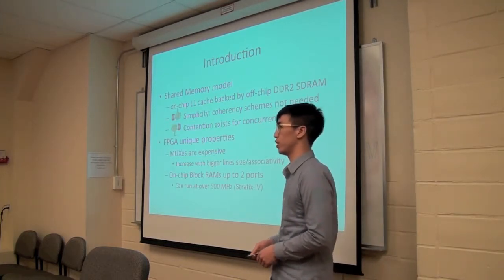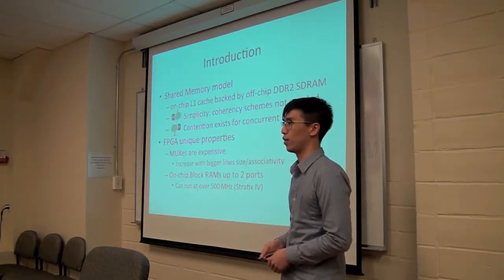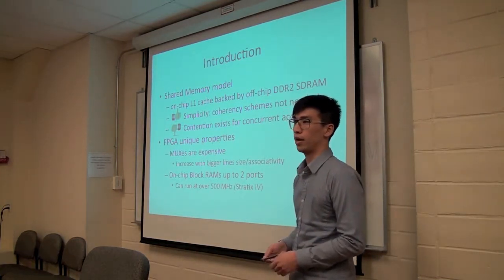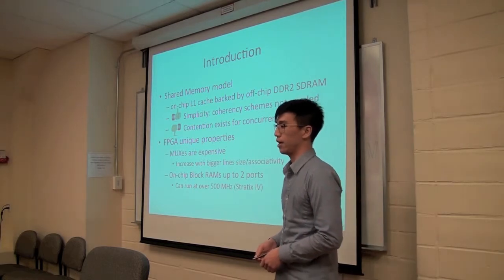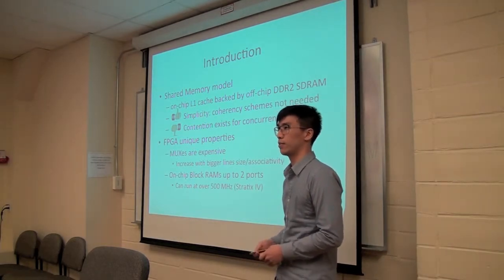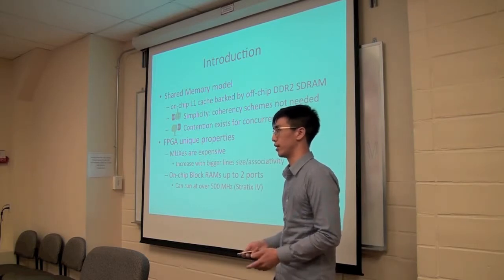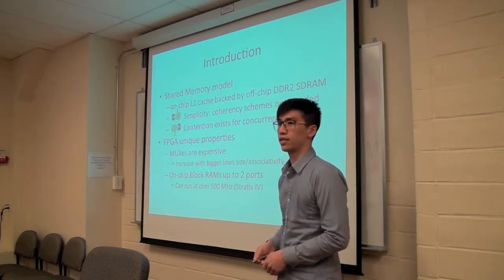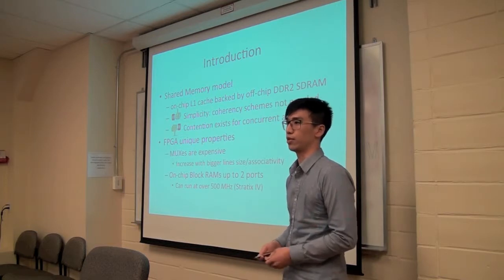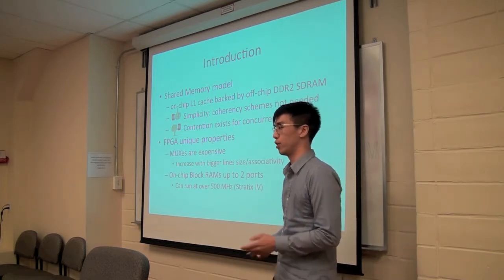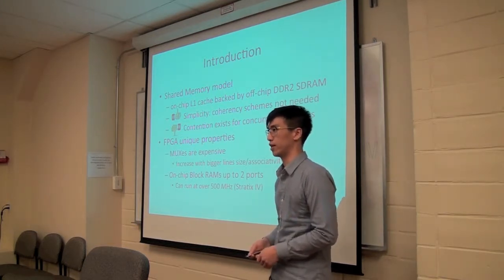To do this we use a shared memory model as shown in the first figure where there's an on-chip data cache backed by off-chip DDR2 memory. The advantage of this method is its simplicity as coherency schemes are not needed which cost latency and area, but the disadvantage is that contention can exist when multiple accelerators want to access them at the same time. But we also look at how to mitigate this fact in this study.